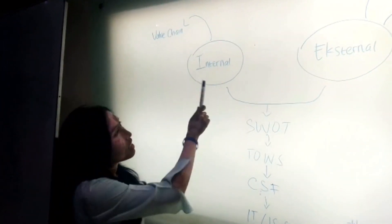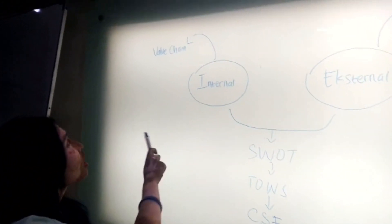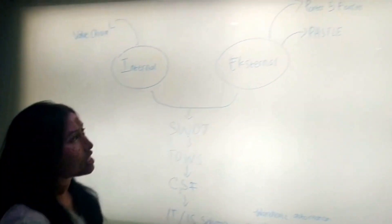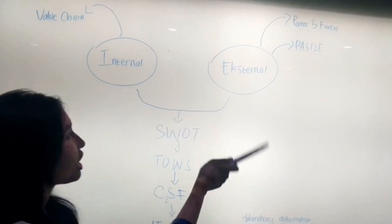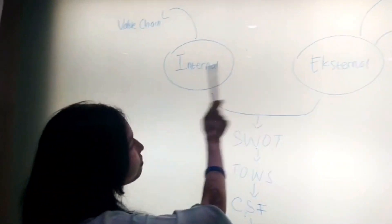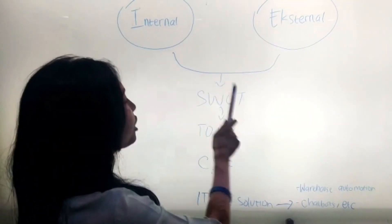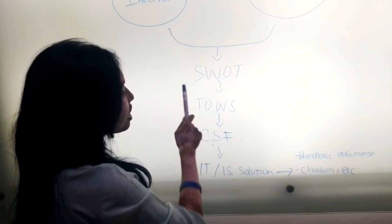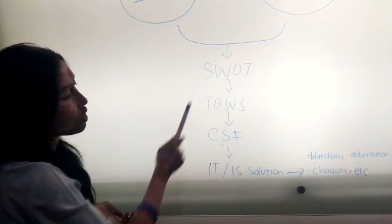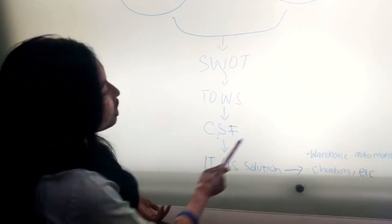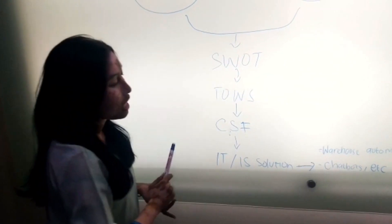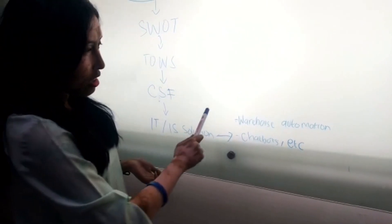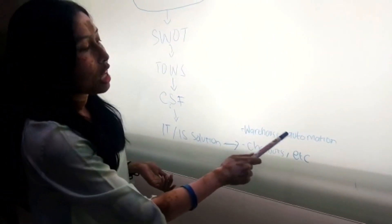We have internal and external factors. For the internal factors, we will use dilution analysis. And for the external factors, we will use Porter's Five Forces and the PESTLE analysis. From both of them, we will get SWOT, and from the SWOT we will get TOWS. From the TOWS, we will get critical success factors, and from the critical success factors we will get IT and IA solutions — including warehouse automation, chatbot, and others.